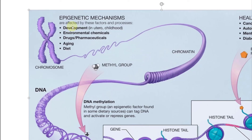Epigenetic mechanisms are affected by these factors and processes: development in utero or in childhood, environmental chemicals, drugs and pharmaceuticals, aging and diet. Again, the DNA sequence has not changed, but you can still change the outward appearance. Here's a chromosome, and if you look into a specific strand of this chromatin — that bundled-up DNA — and zoom in further.